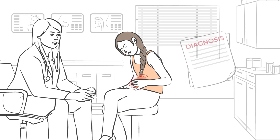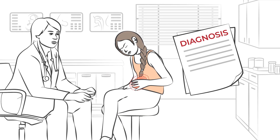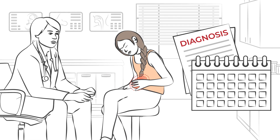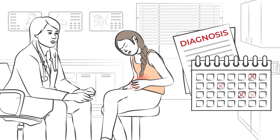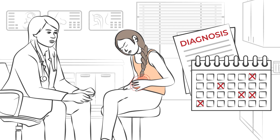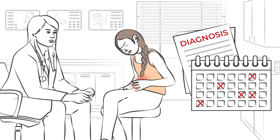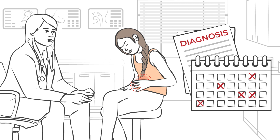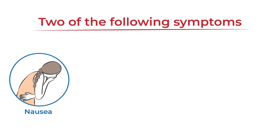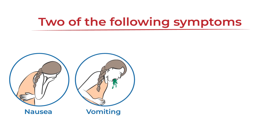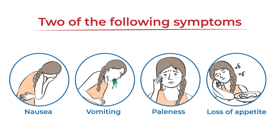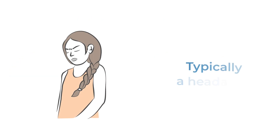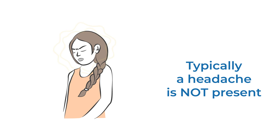To receive a diagnosis of abdominal migraine, a person must have had at least 5 recurrent episodes of moderate to severe dull pain in the abdomen, usually around the midsection or belly button. The person must also have at least two of the following: nausea, vomiting, paleness, or loss of appetite. Typically, a headache is not present.